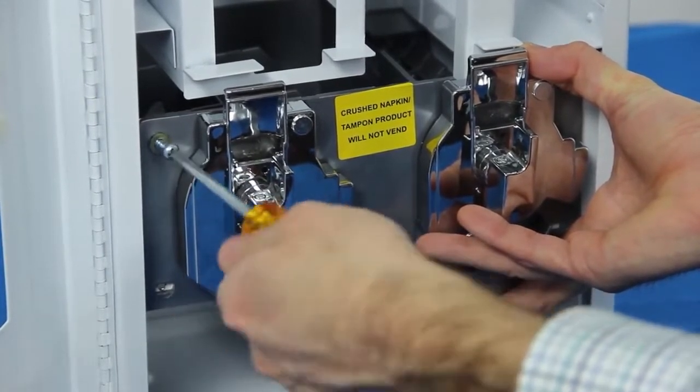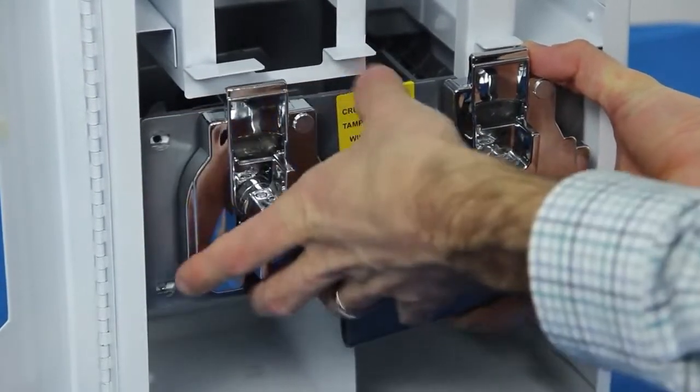Then, gently pull the console out of the metal case. It helps to twist or turn it slightly.